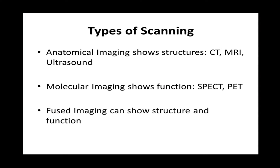There is also molecular imaging. Molecular imaging doesn't show us structure — it shows us function, how the tumor is functioning, what kind of characteristics it has on a molecular level. The imaging modalities available for that are SPECT, which stands for single photon emission computed tomography, and PET, which stands for positron emission tomography. In the last couple of years, there's also been development of fused imaging, which combines anatomical and molecular imaging so with one scan we get information about both structure and function.